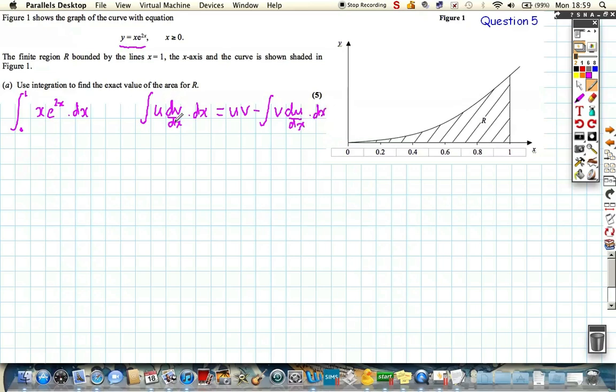From this we need to establish our u and our dv dx. The best thing to do is to label u as your x term, unless there was a log term in this and then we would make u our log term. So u is our x and dv dx is equal to e to the 2x. That means we also need to know du dx, which is just 1, and we need to know what v is. So we need to integrate this term here. The integral of e to the 2x is half e to the 2x.